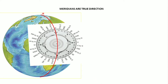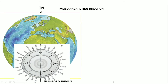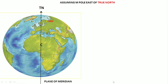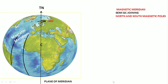The meridians are the true direction for true north and south. Being a great circle, it will pass through the centre of the earth, so this plane also would be pointing north and south. Like the meridians, which join the north and south pole as semi-great circles, magnetic meridians are also semi-great circles which join the two magnetic poles.